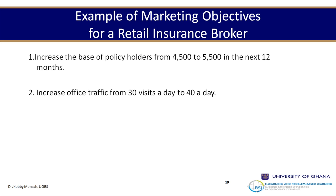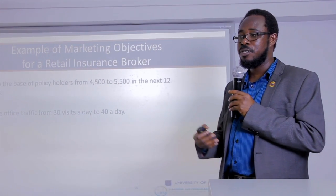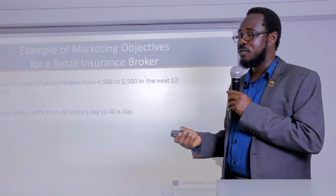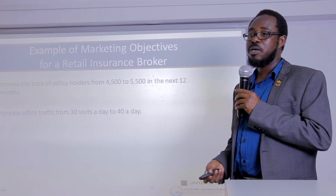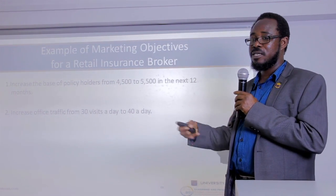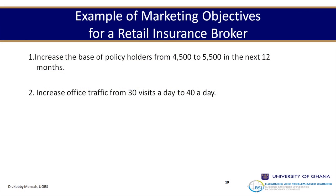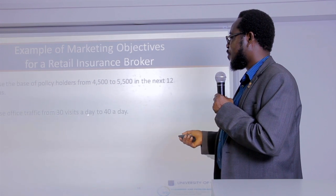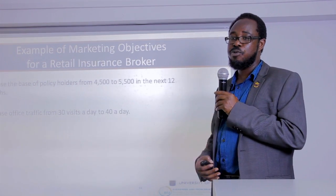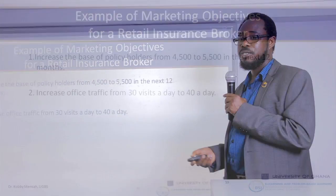As an example of marketing objectives for a retail insurance broker: increase the base of policyholders from 4,500 to 5,500 in the next 12 months. To achieve this, the strategy might be market penetration by reducing premiums, offering friends-and-family discounts, or acquiring smaller companies to reach the target. Another objective: increase office traffic from 30 visits a day to 40 a day, which may involve promotions targeting new consumer acquisitions.